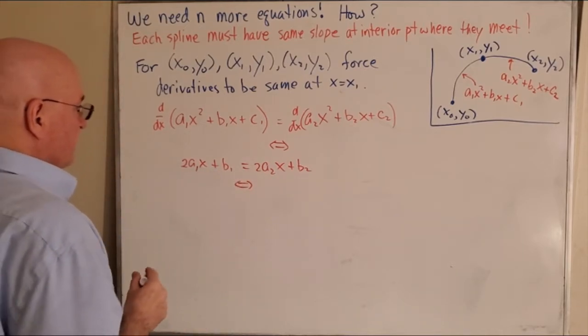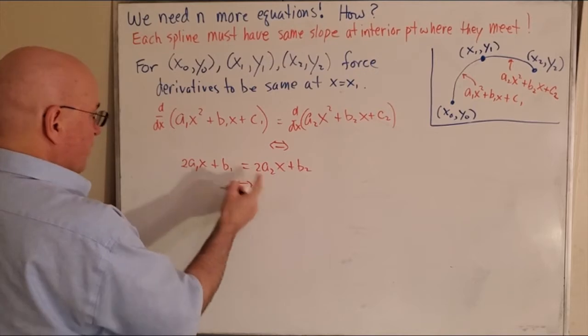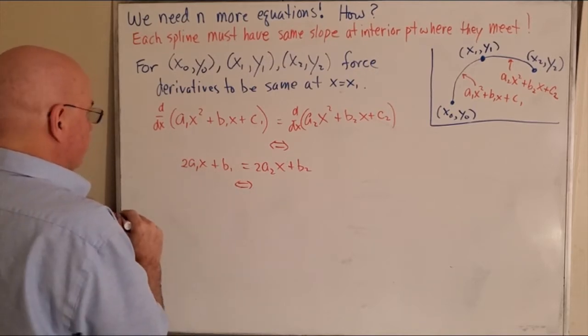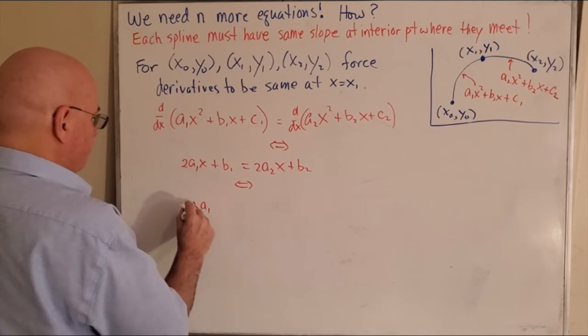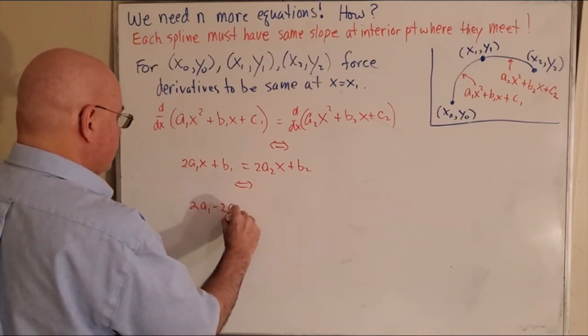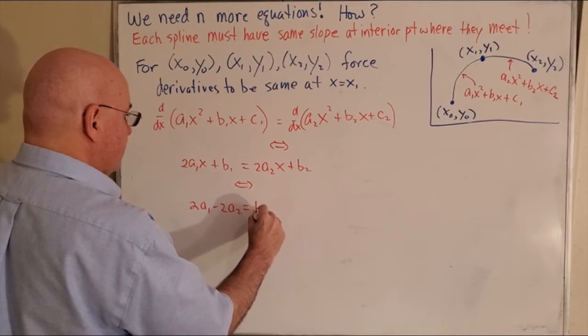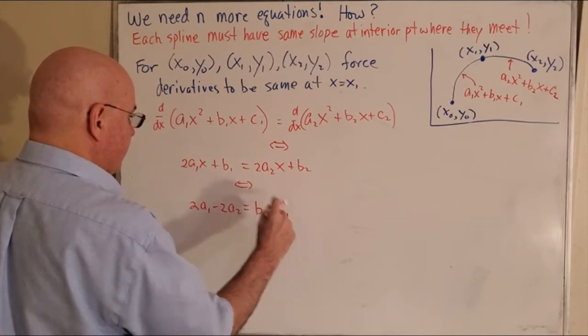And let's see, how do I want to write this? I think I'm going to put all the a's on the left and the b's on the right. 2a1 - 2a2 = b2 - b1.